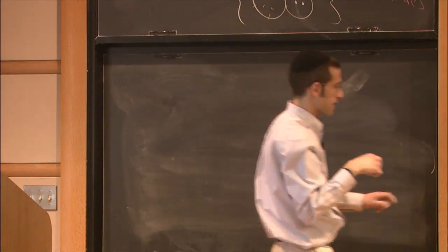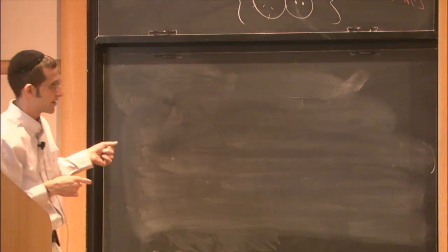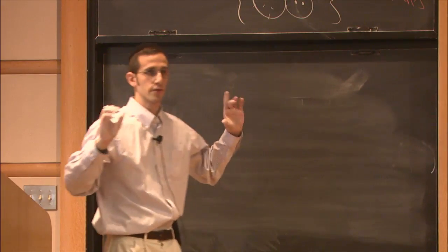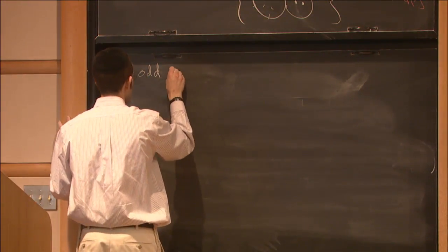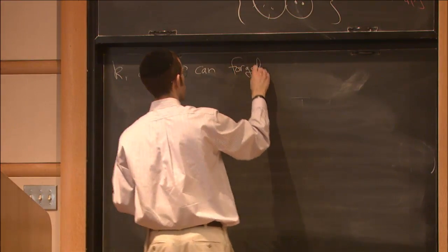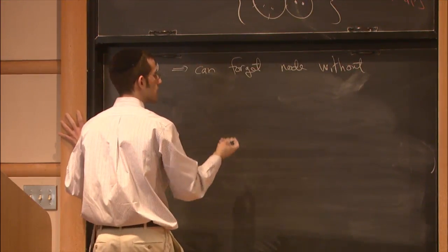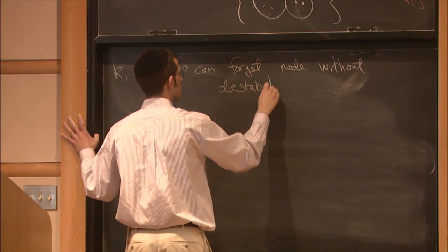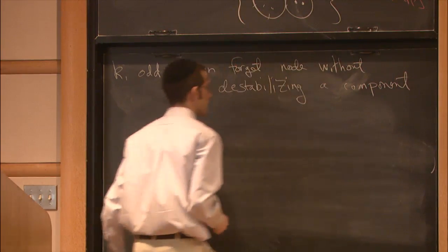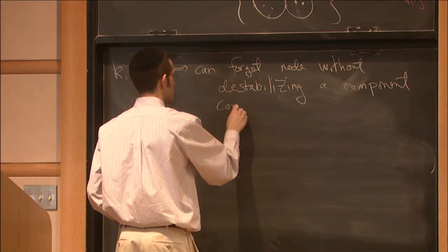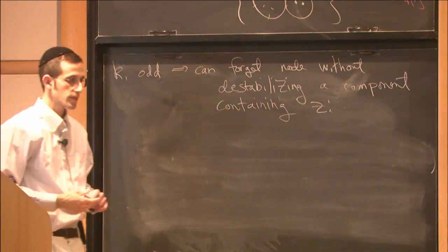Because K_1 is odd and therefore always nonzero, you can always forget the boundary marked point coming from the node without destabilizing anything. So you can forget the node without destabilizing a component containing z_i.